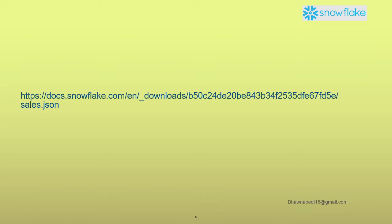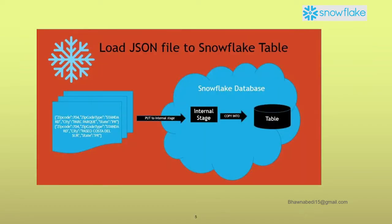I will leave a link in the description box where you can download the same sales.json file I used for this demo, so you can perform the same demo on your own system. The workflow is: we use the PUT command to upload the JSON file to a stage, and then from the stage we use the COPY command with transformations to flatten the schema and load it into the table.